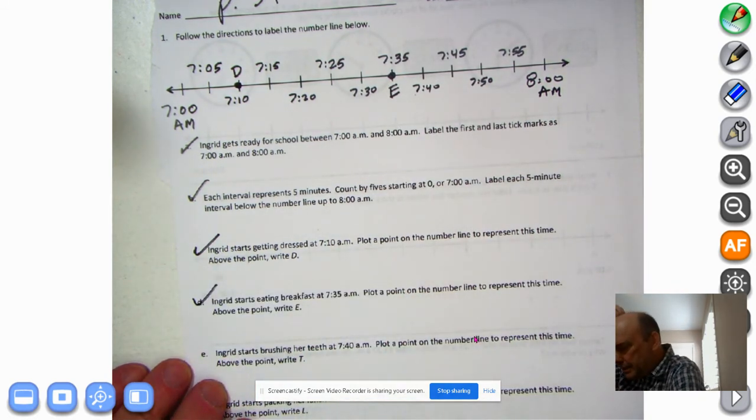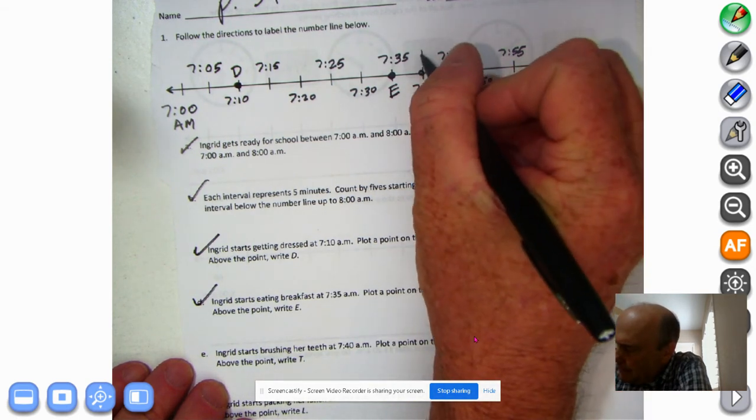E. Ingrid starts brushing her teeth at 7:40 AM. Plot a point on the number line to represent this time. Above the point, write T. So 7:40. T.